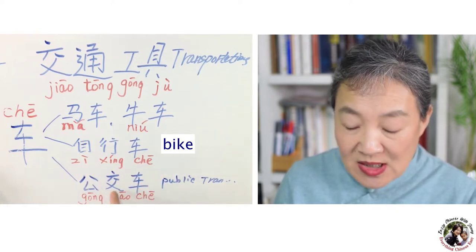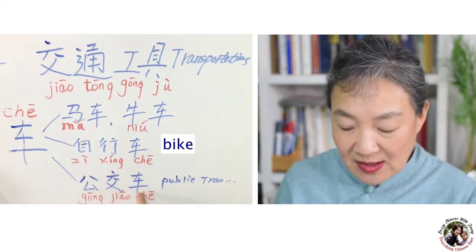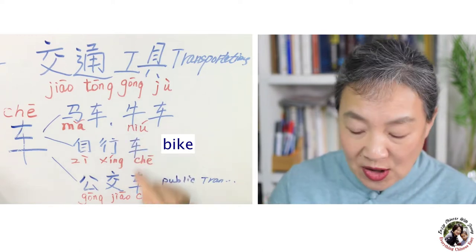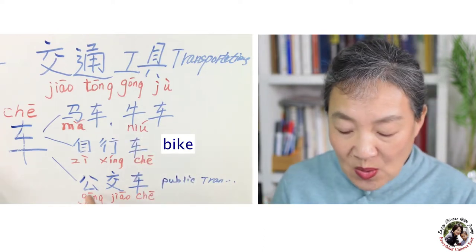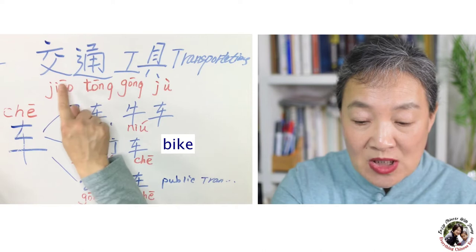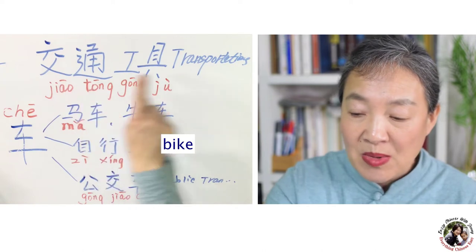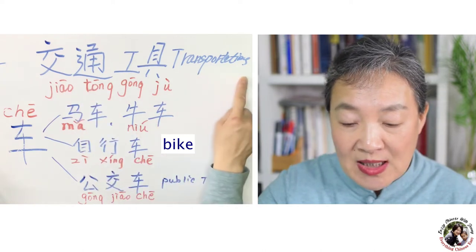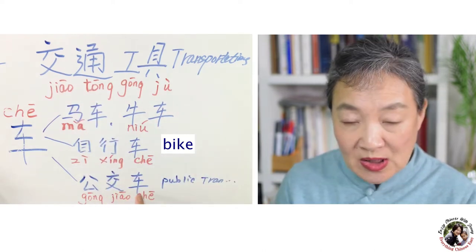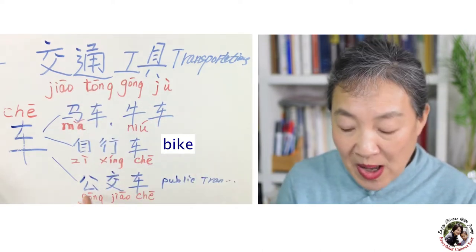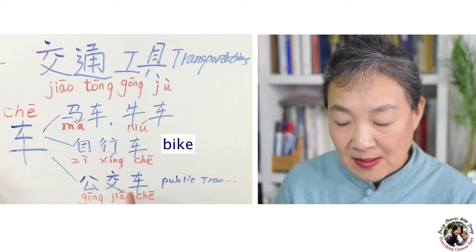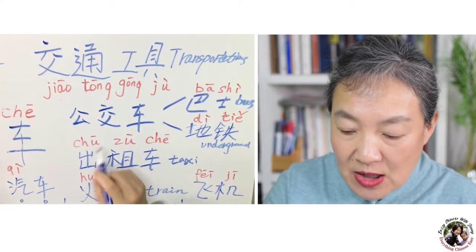公交车 — so it all ends with 车. 公 means public, 交通 means transportation, so 公交车 means public transportation. Let's continue.